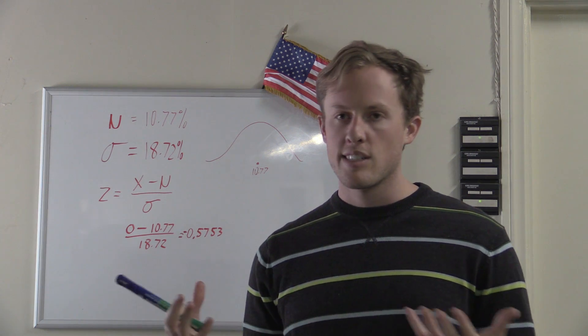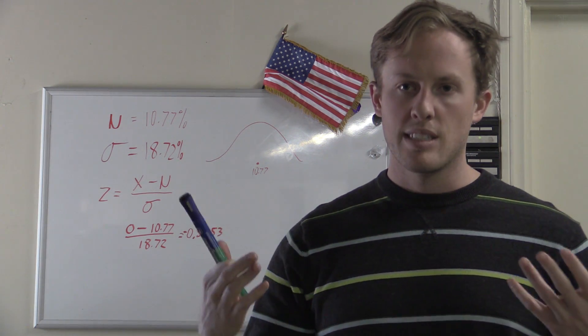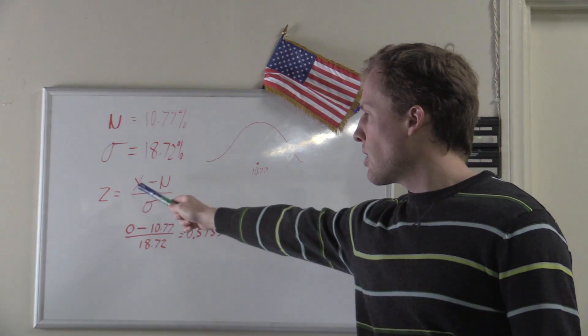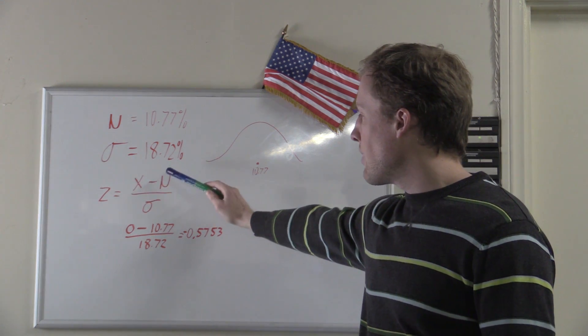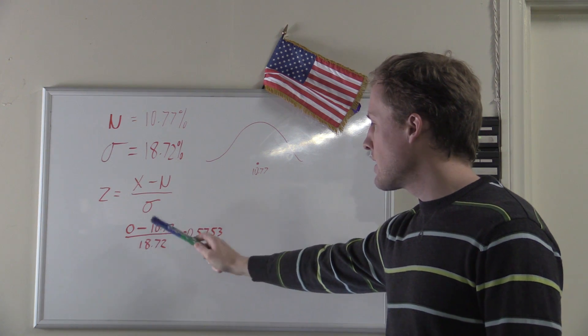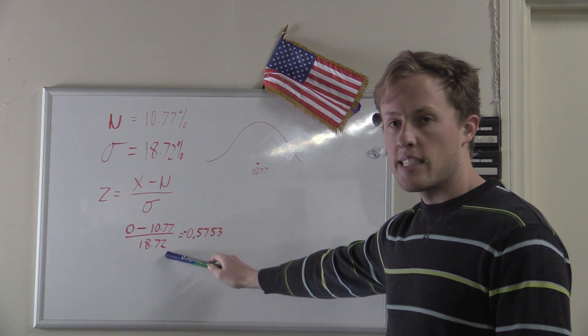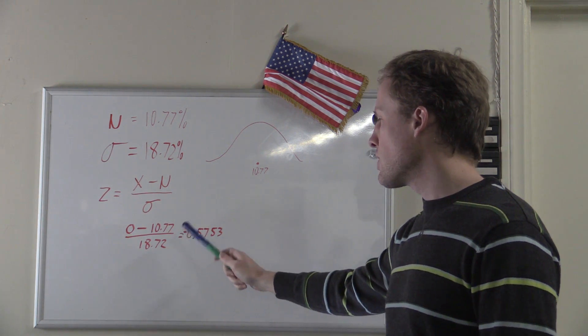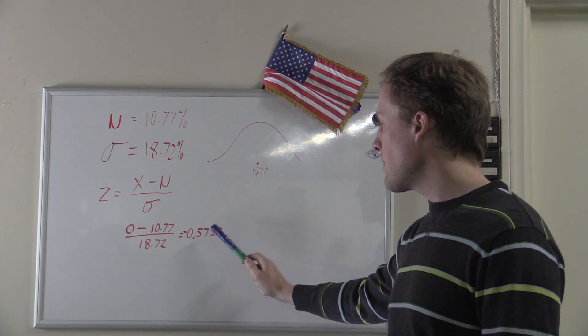If we return less than 0%, that means we're losing money. I put in 0 for X, and then I have my mean and my standard deviation from up here. Calculate out the Z-score. 0 minus 10.77 divided by 18.72 equals negative 0.5753.